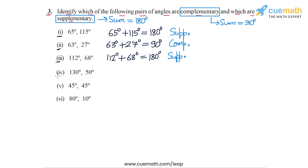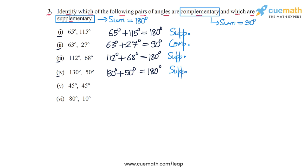In part 4 we have 130 degrees and 50 degrees. Their sum is again 180 degrees, so this pair of angles is also a pair of supplementary angles.